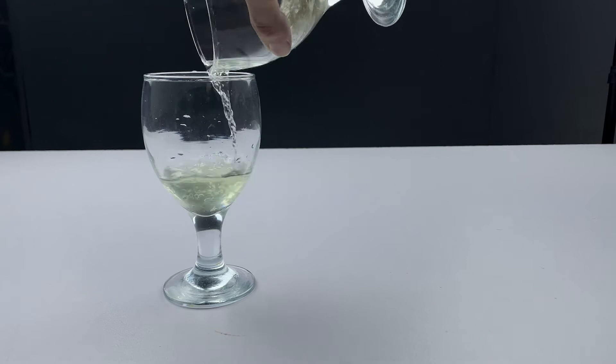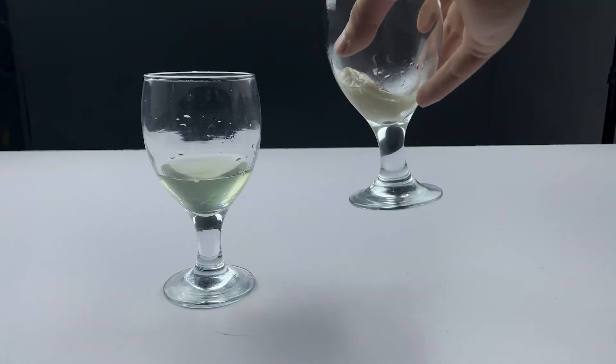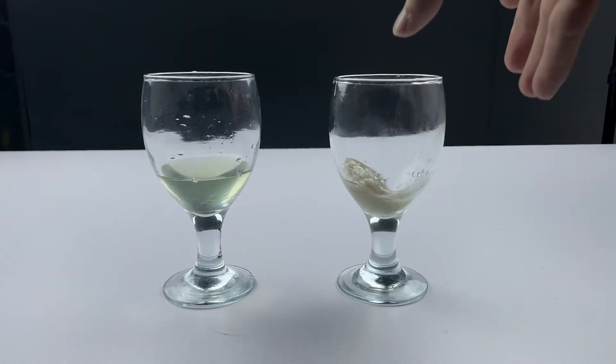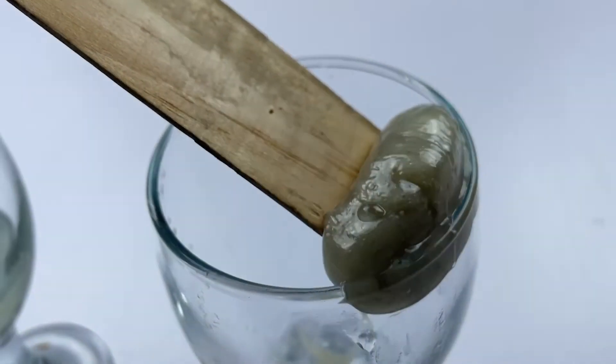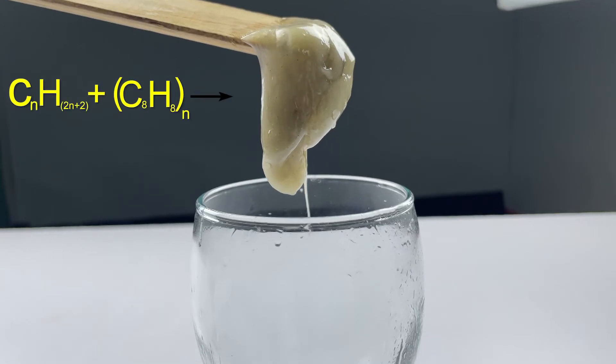Put extra petrol in another glass. Lift the glue with wooden stick. Magic glue is ready.